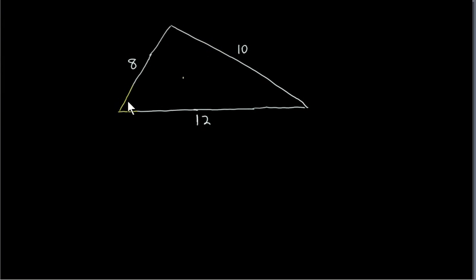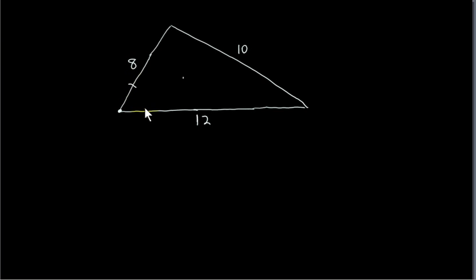What we do is we bisect two of the angles. So we could bisect this angle here, for example. One way to do that is to mark off equal lengths from this point here. So you could use a compass, put the compass point here, set the compass to this distance, mark it off, and mark off the same distance here on this side.